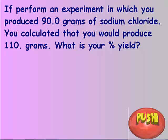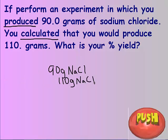So the simplest type of percent yield problem you would see is one like this one. It says that you performed an experiment. You produced 90 grams of sodium chloride, which means the 90 grams of sodium chloride is my actual yield. You calculated that you would produce 110 grams, so that must be my theoretical.